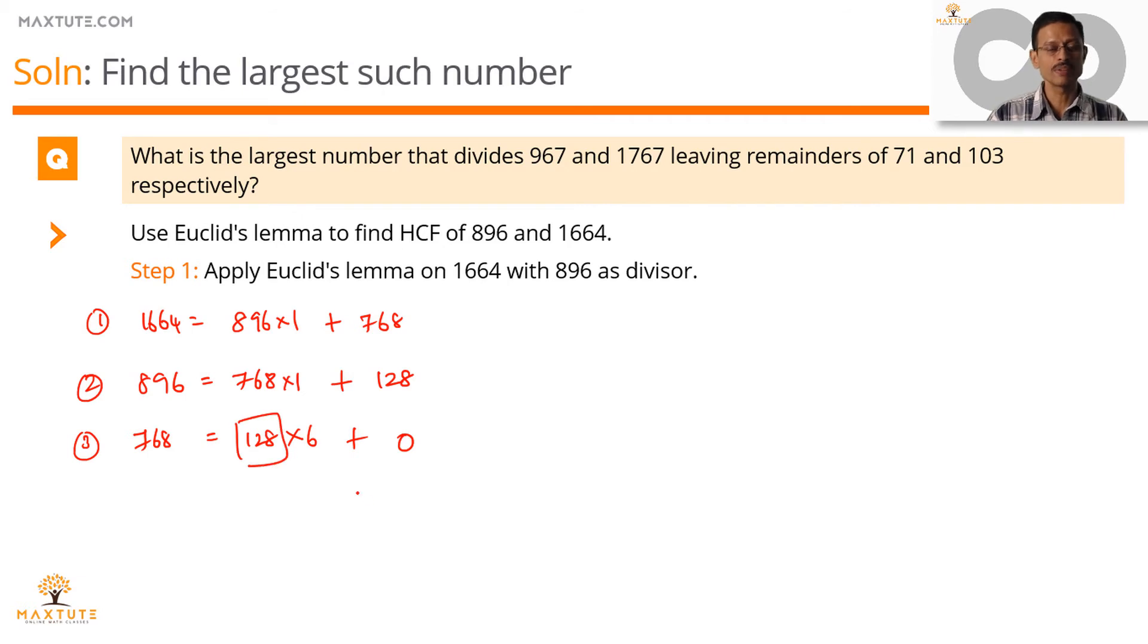The divisor of this step is our HCF. So, the HCF of these two numbers 896 and 1664 is equal to 128. The HCF of these two numbers we said is the value of x which we are looking for. So, the largest number that divides 967 and 1767 leaving remainders of 71 and 103 respectively, that number is 128.